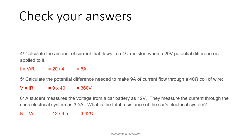Calculate the amount of current that flows in a 4 ohm resistor when 20 volts of potential difference is applied: I = V / R = 20 / 4 = 5 amps. Calculate the potential difference needed to make 9 amps of current flow through a 40 ohm coil: V = I × R = 9 × 40 = 360 volts. A car battery measures 12 volts and 3.5 amps current through the electrical system: R = 12 / 3.5 = 3.42 ohms.